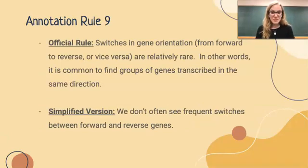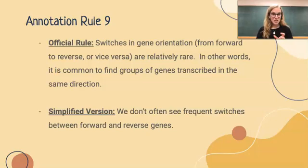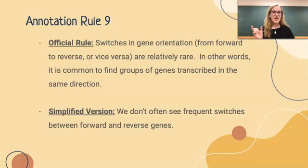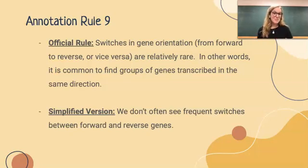The ninth rule reads: we don't often see frequent switches between forward and reverse genes. Space in a phage genome is incredibly conserved, and seeing frequent switches between forward and reverse genes would actually waste a lot of space, because as we learned in rule seven, there have to be 50 base pair gaps on either side of forward/reverse switches so promoters can do their job. If the computer calls a lot of switches, we can assume those aren't correct based on what we know about phage genomes.